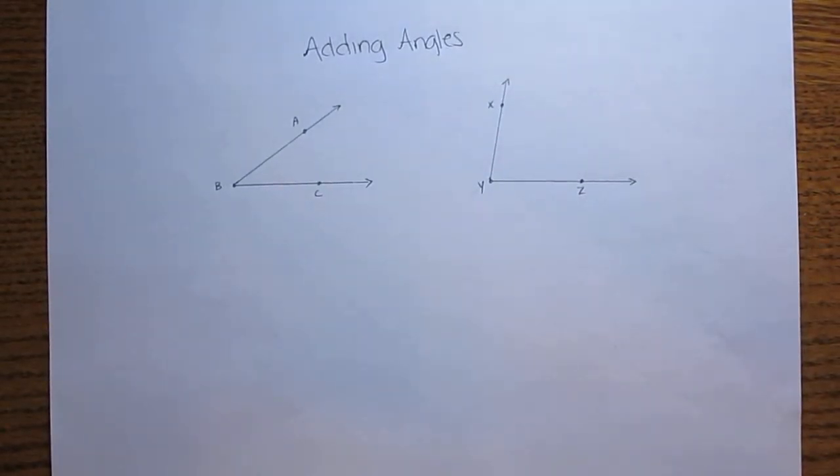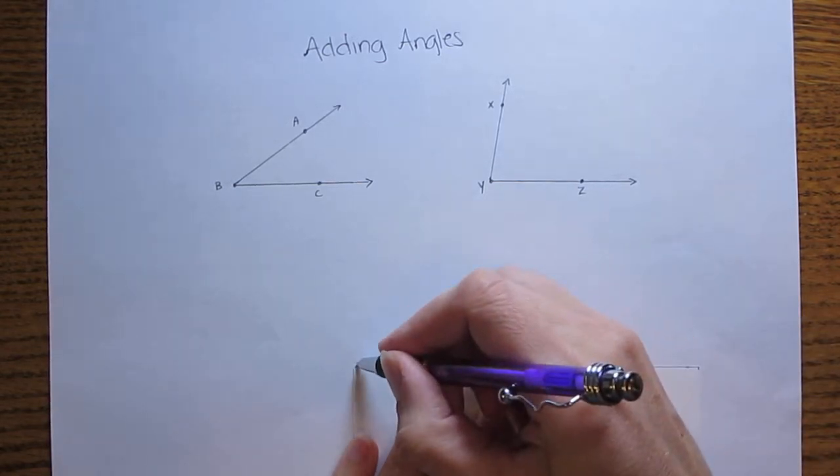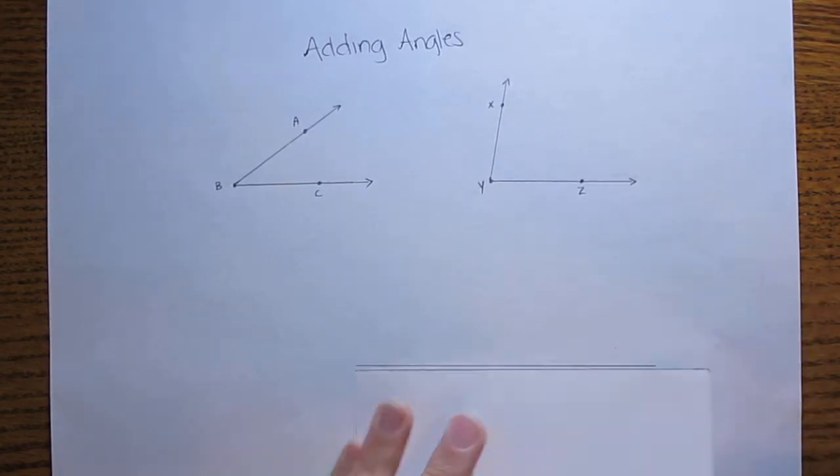In this video we're going to work on adding angles. If you're asked to add two angles together by construction, these are the steps that you would take to do that. The first thing is we're going to start by using our straight edge to draw a line segment. This will be the base for the angle that we're going to copy.